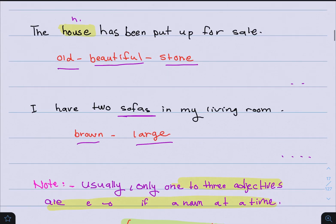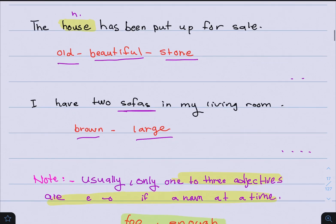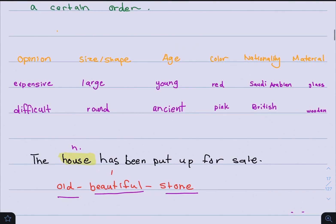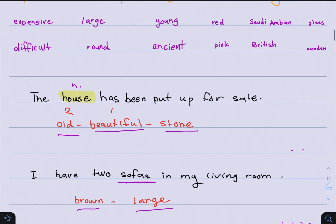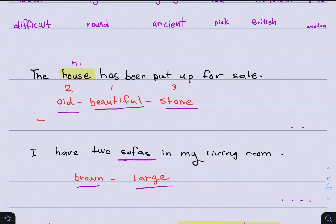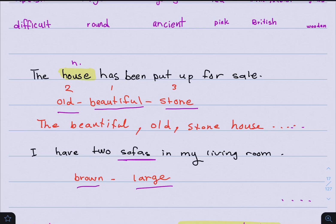Now let's take a look at an example. The house has been put up for sale. The noun here is house, and adjectives come before the noun. The first adjective is 'beautiful,' which is the opinion. Then we check for size, age — since we have age, it comes second. We don't have color or nationality. So we have 'stone,' which is the material, the last thing. You will say: the beautiful, old, stone house has been put up for sale. Remember to add a comma between adjectives.